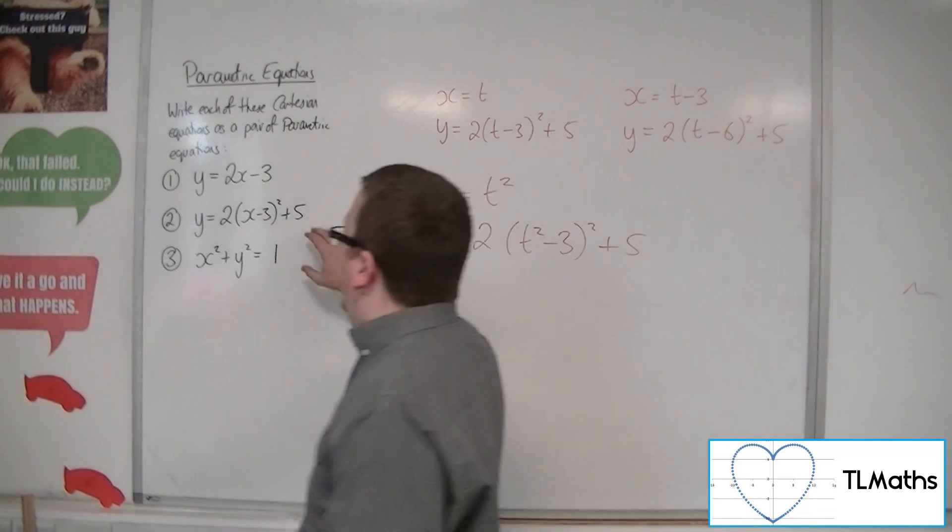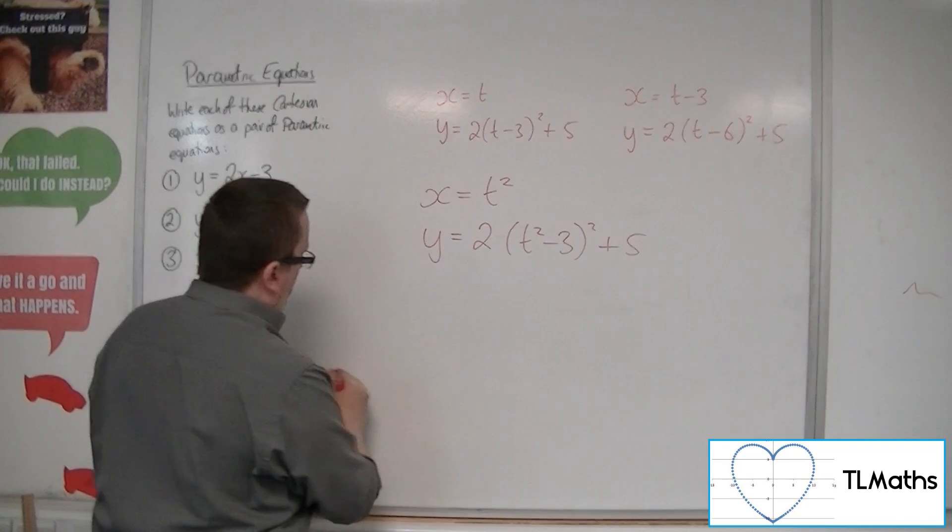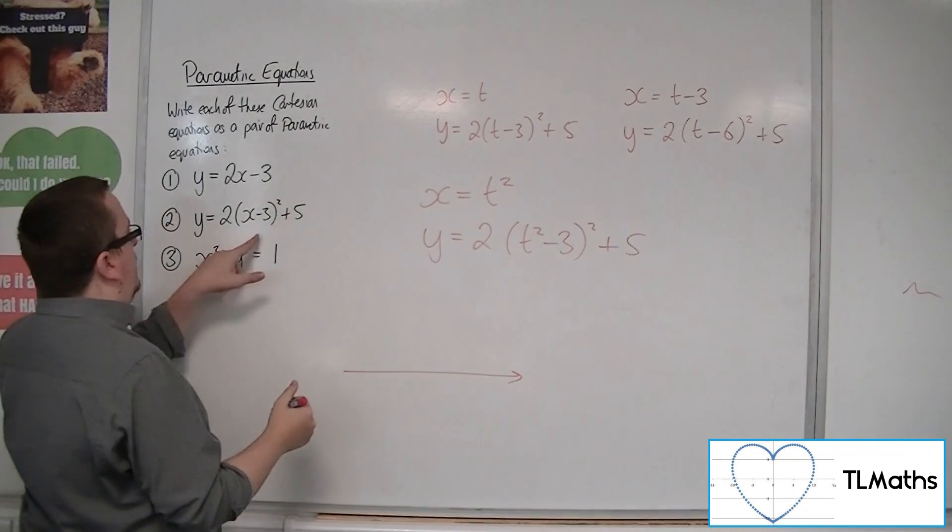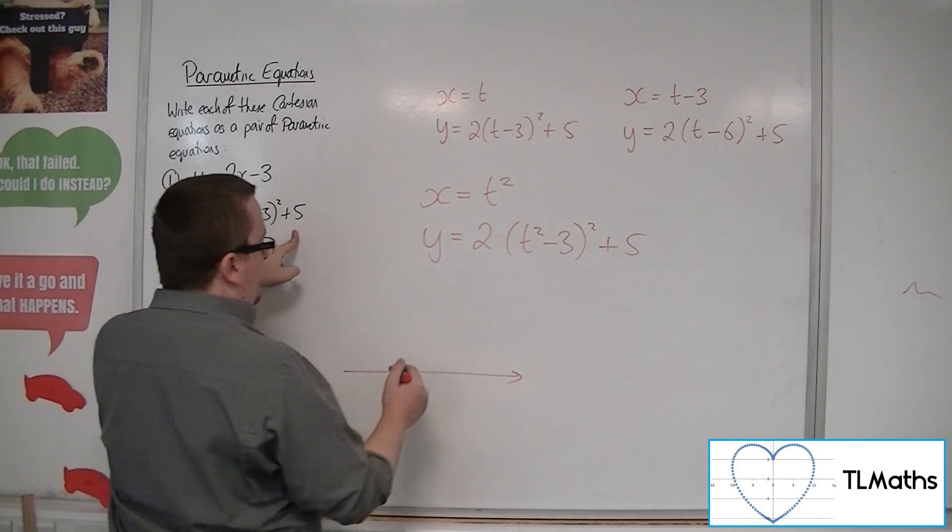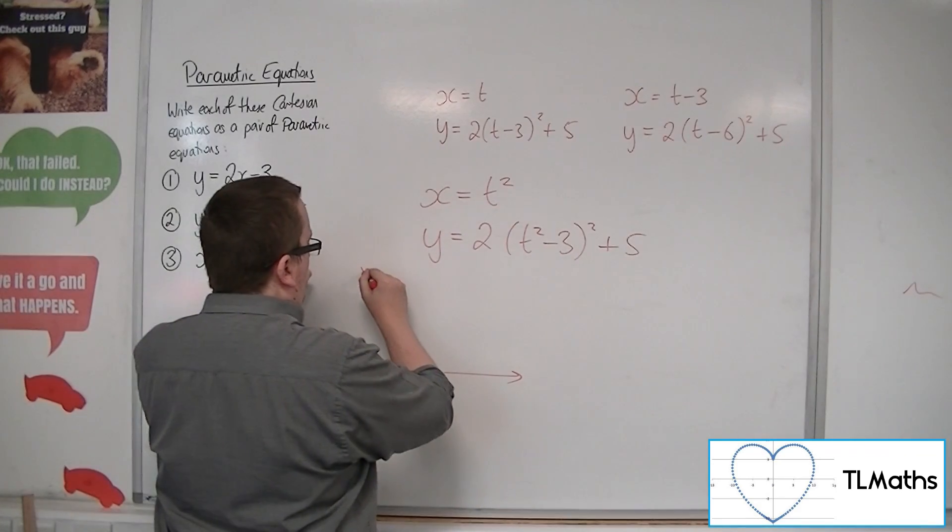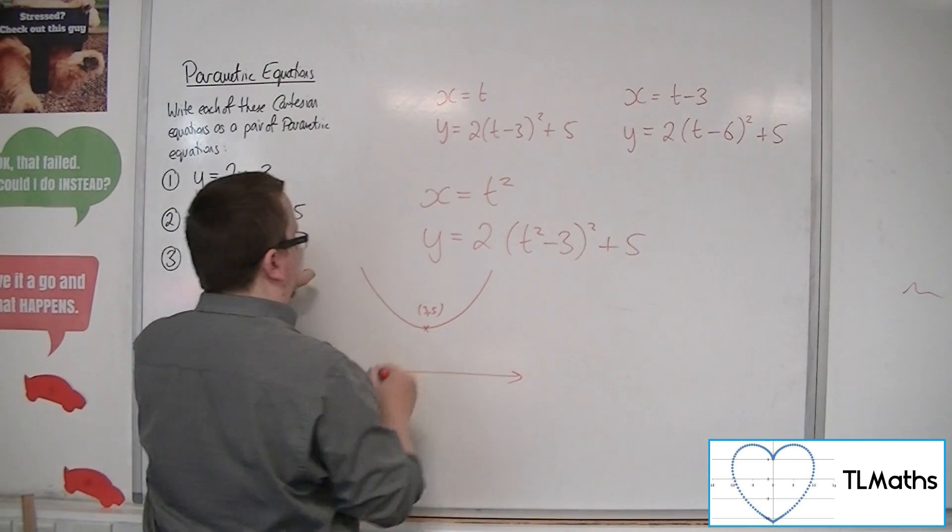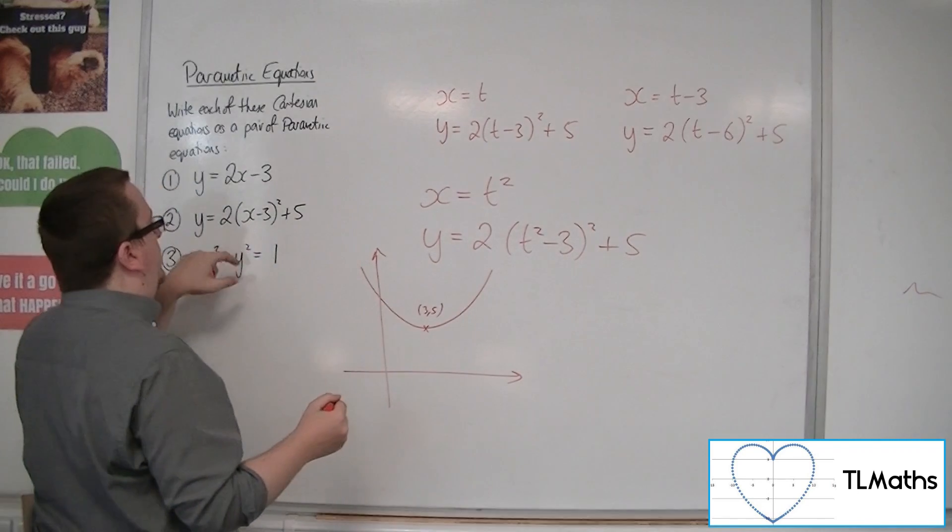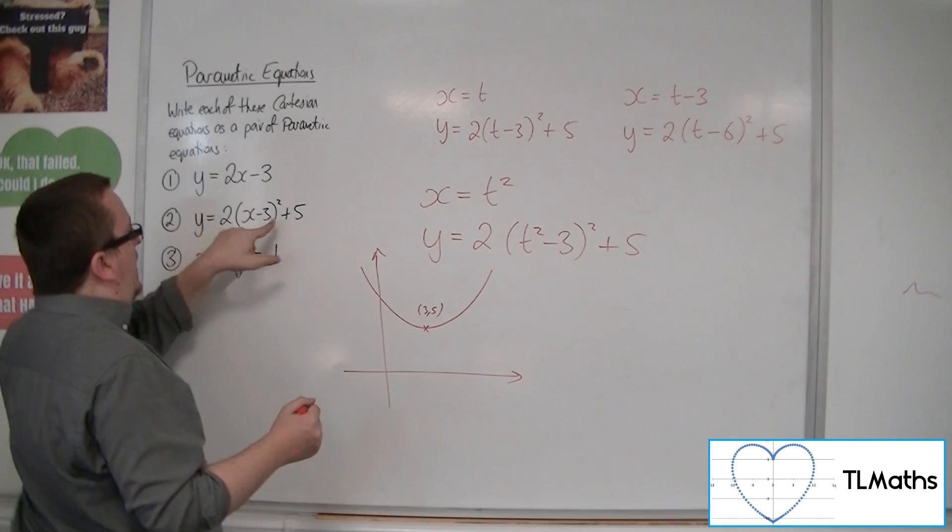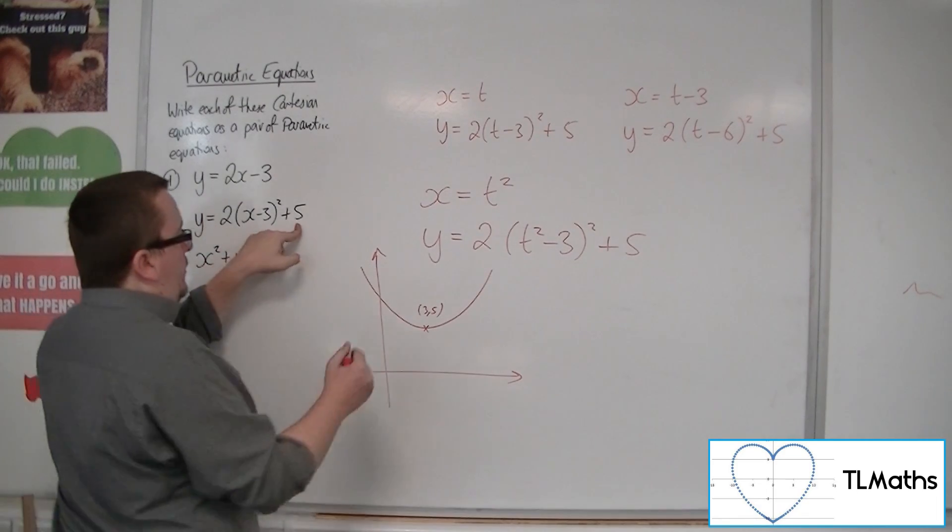Because if you think about what this curve looks like, so that's the curve y equals 2x minus 3 squared plus 5 has a vertex at 3, 5. Then this is a curve, something like this. There's 3, 5. But it's crossing through the y-axis when we're at 3 squared, 9, 18, plus 5 has a vertex at 23.